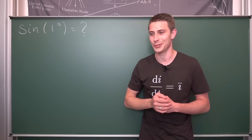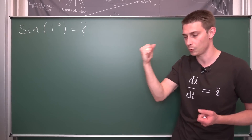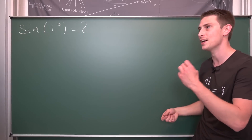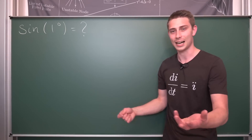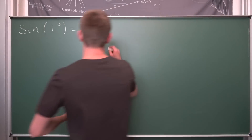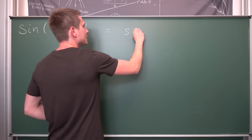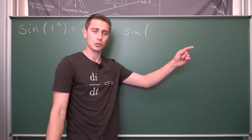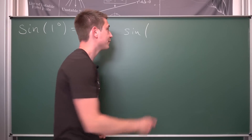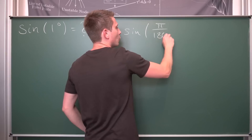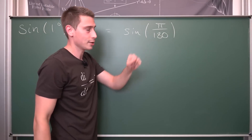After rewriting the one degree — no one wants degrees, we want radians. We are the radian gang here. Let us rewrite the sine of one degree at first, and then continue from this point onwards. So one degree is the same as saying pi is equal to 180 degrees, meaning one degree is nothing other than pi divided by 180.